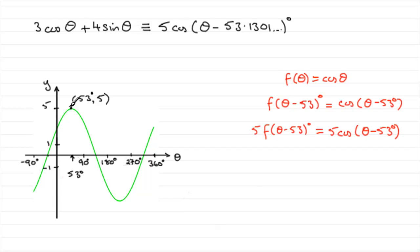So you can see from the graph that the maximum value is going to equal 5, and that occurs when θ, the first positive value of θ, has to be this one here at 53°.